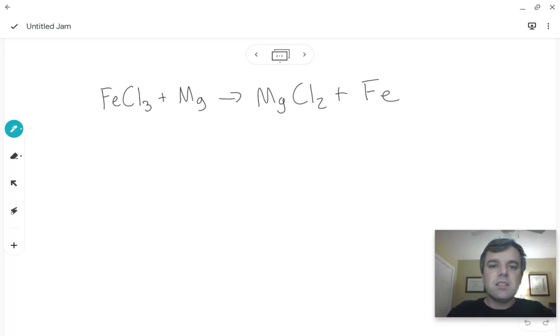But the first thing we need to do in this reaction is we need to assign charges to everything in it. So, this one is nothing complicated. We can just use all of our tricks from the periodic table. And we also need to remember that magnesium by itself has a charge of zero. Iron by itself has a charge of zero. Chlorine would be negative one, and iron is positive three. Magnesium is plus two, and chlorine is negative one.